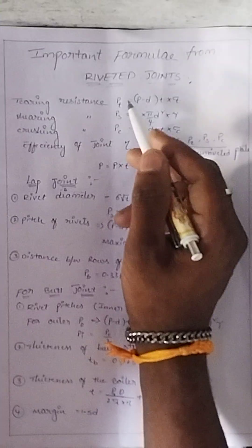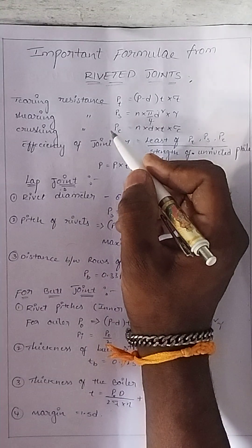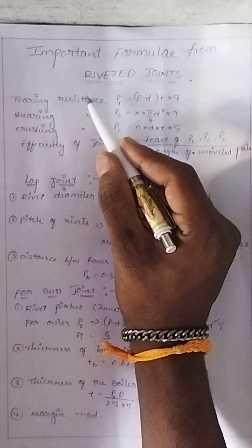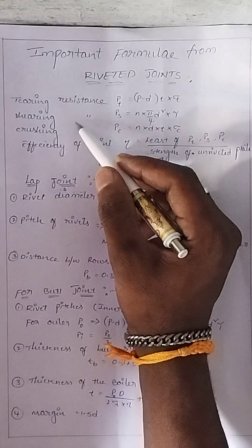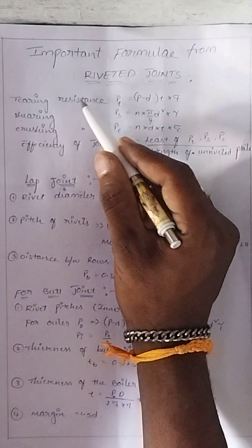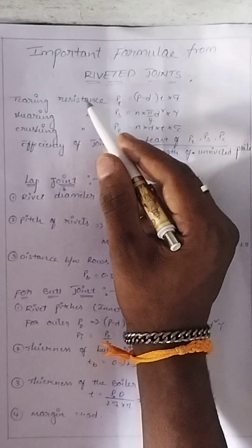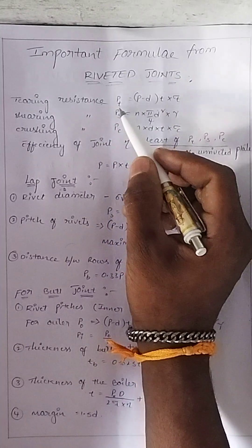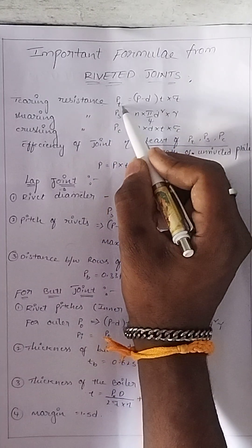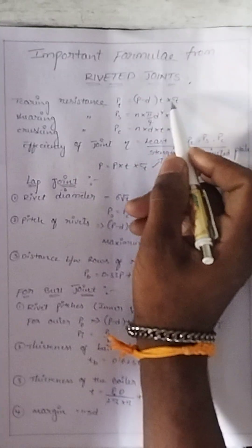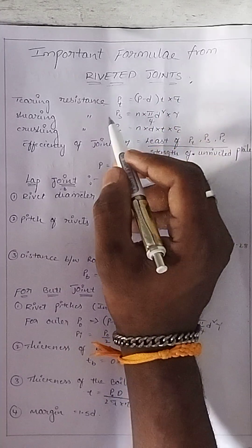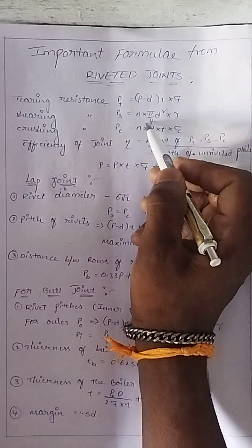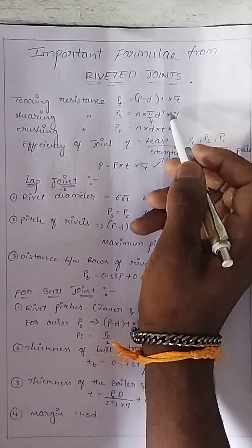Today we have three formulas. The first is the formula for tearing resistance. Next is shearing resistance, denoted as PS. The formula for shearing resistance is N into π by 4, D squared into tau (τ). This is the formula for shearing resistance.